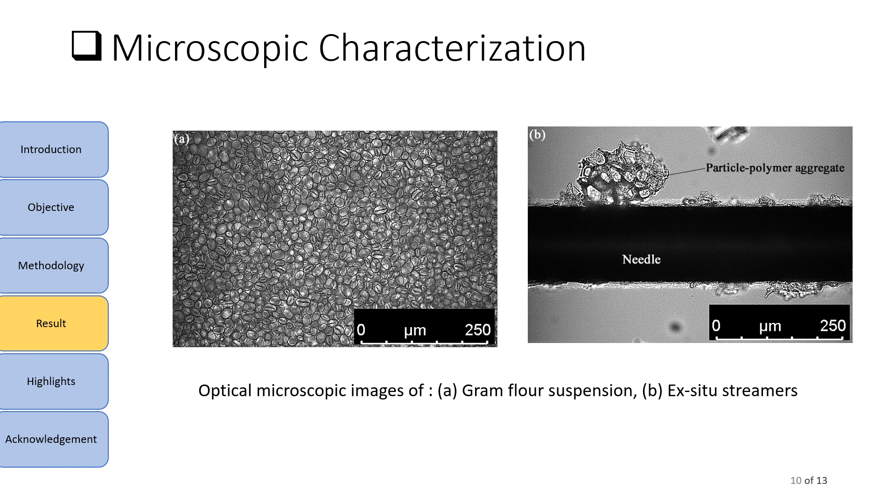Finally, to have a closer look on the phenomenon of streamer formation, an optical microscope was used. The first image here is the microscopic image of gram flour suspension. It can be seen that the gram flour particles are nicely separated from each other in the absence of polymer. The second image here is the microscopic image of the needle taken out carefully just after the streamer formation experiment. Here this black portion is our needle and we can observe polymer mediated particle aggregates tethered on this needle.